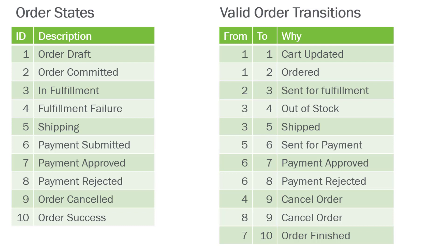A row in the order table could be in any of those states. If it's a 1, it's in draft. And if it's a 5, the order is currently shipping. Then we need a second table that says here are all the valid transitions that I can make from one state to another. The deal is, when you express it this way, you can't go from, say, 1 to 6, because there's no row that says from 1 to 6.